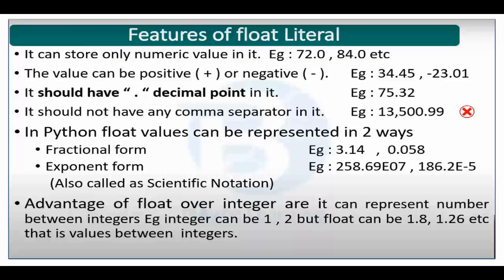Floating literals are those numbers which have a decimal value. For example, if I write 'a = 72' then a is an integer literal, but if I write 'a = 72.0' then a will be a floating variable. Floating variables can also be positive and negative. They should have a decimal point but should not use a comma separator. In Python, floating variables are represented in two ways: fractional form, for example 3.14 or 0.58, or exponential form.